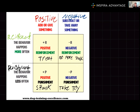Punishment can also be either positive or negative. Positive punishment involves the presentation of an unpleasant stimulus, such as a spanking or scolding, to decrease the likelihood of a behavior being repeated. Negative punishment involves the removal of a pleasant stimulus, such as taking away a favorite toy, to decrease the likelihood of a behavior being repeated.